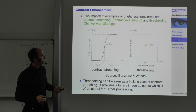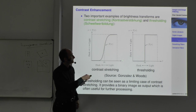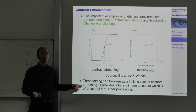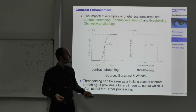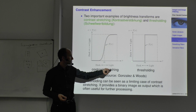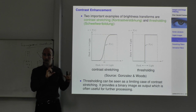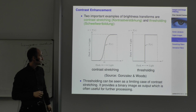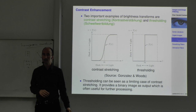The extreme case of contrast stretching is thresholding — a transformation that binarizes the image: all values below some value M are set to black, all values above are set to white, like the head image shown earlier. Thresholding is a limiting case of contrast stretching, providing a binary image. As mentioned, this can be useful for further post-processing because a decision is taken for every pixel: are you in that domain or not.